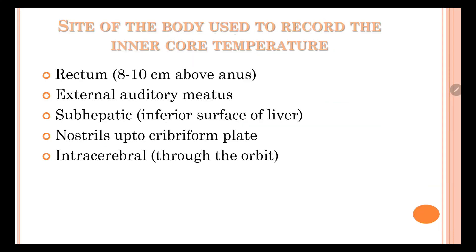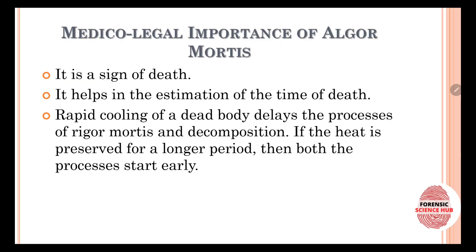Regarding the site used to record the inner core temperature, the most important and reliable site is the rectum, 8 to 10 centimeters above the anus. Other sites that can be used include the external auditory meatus, the sub-hepatic area, the nostrils, and the intracerebral area, but the rectum is the most commonly used site.